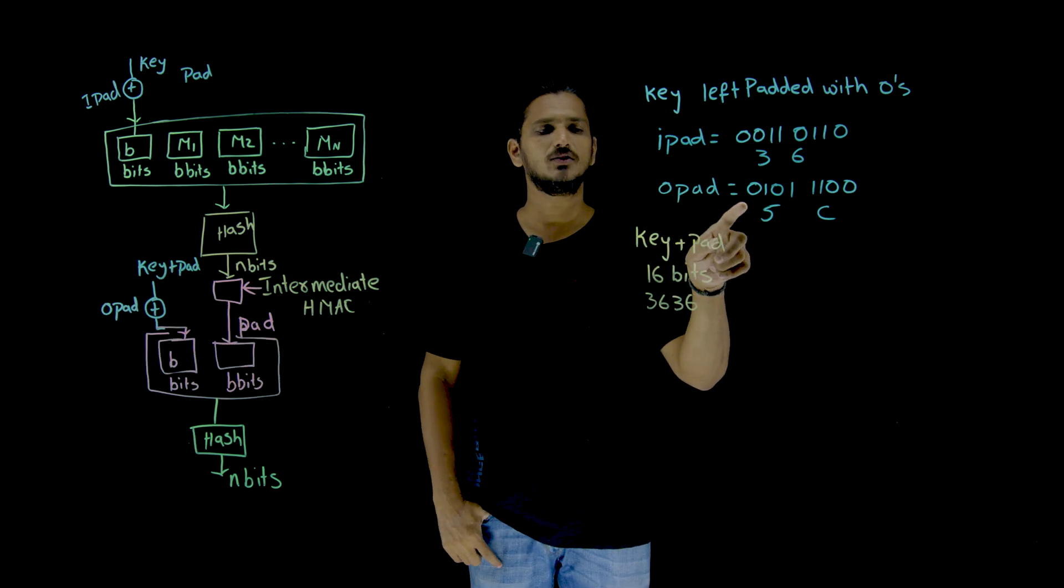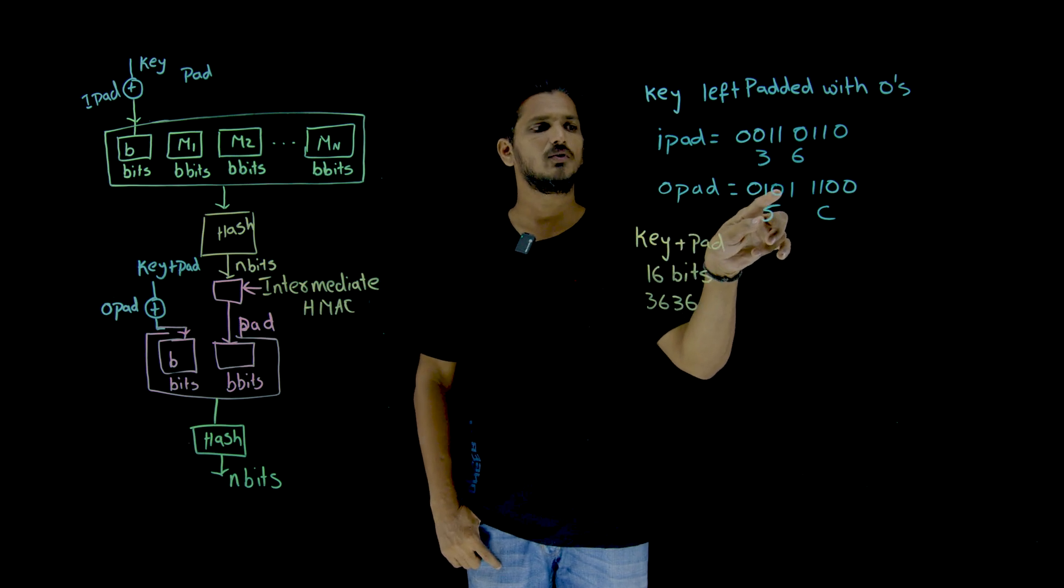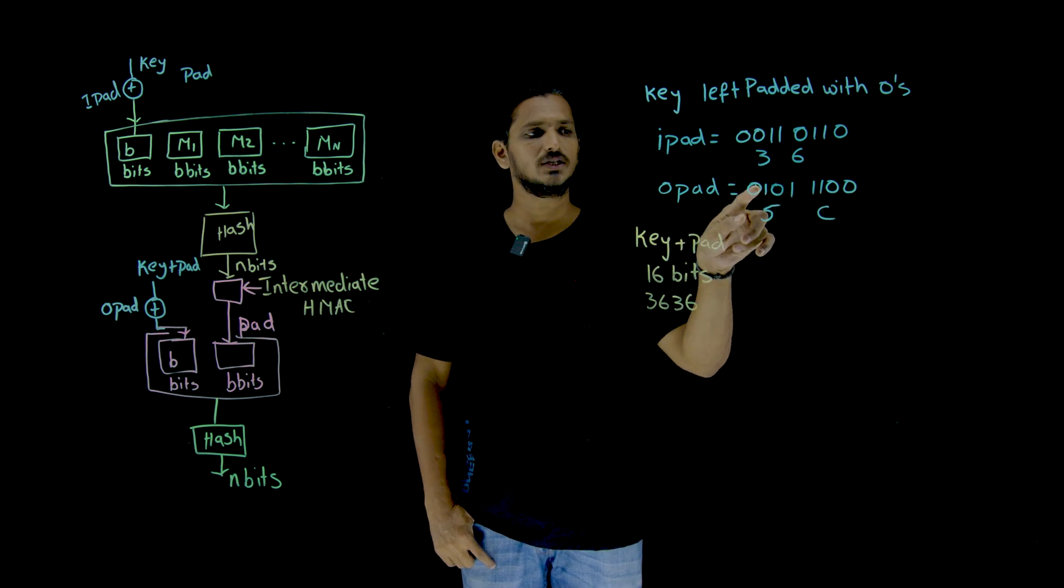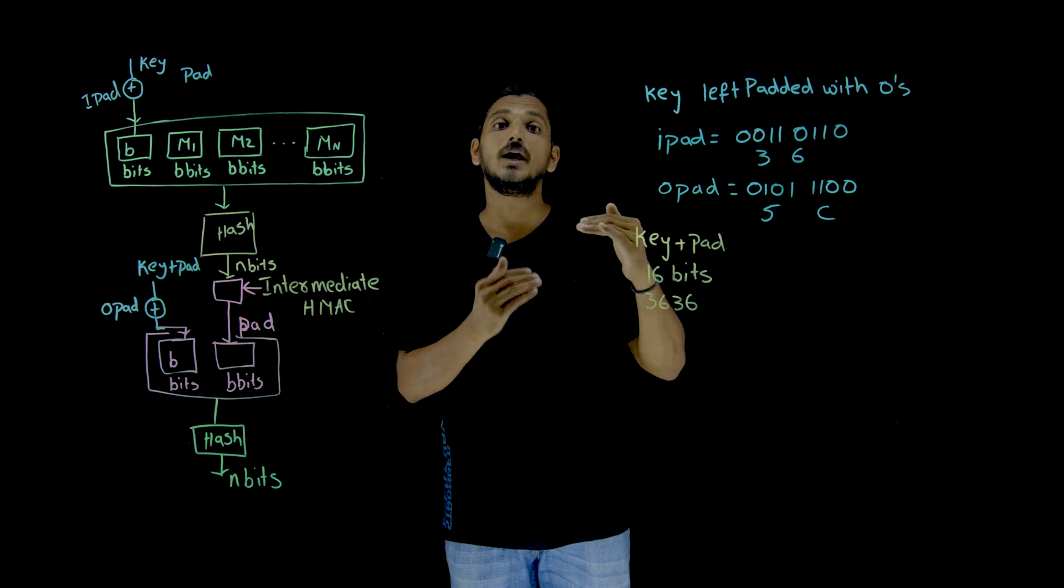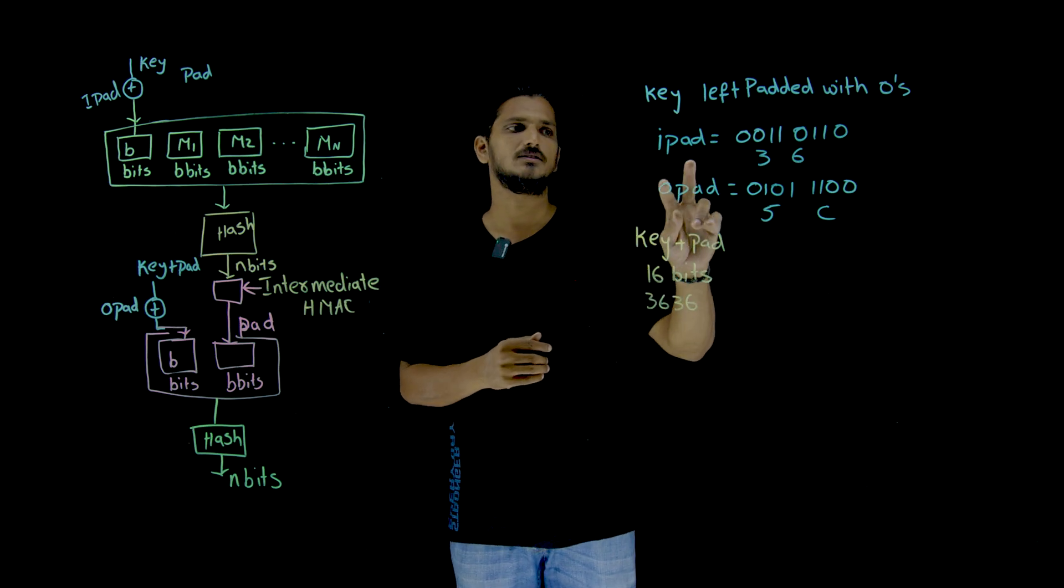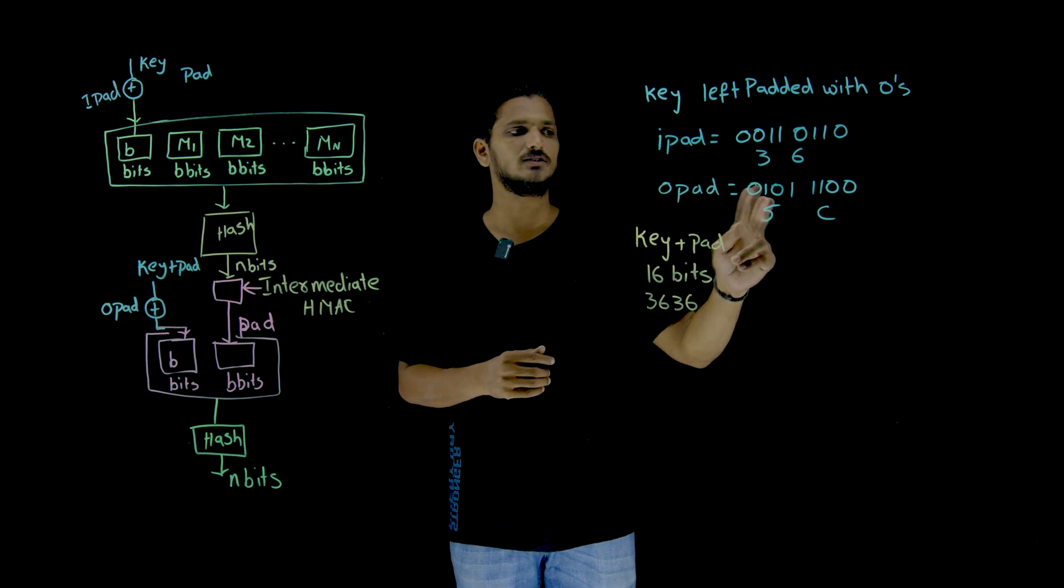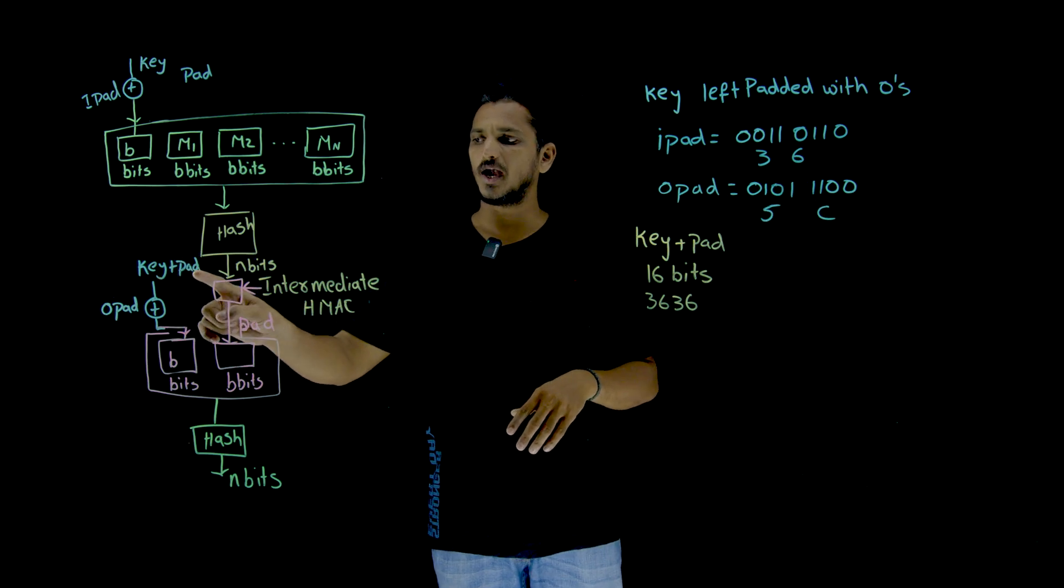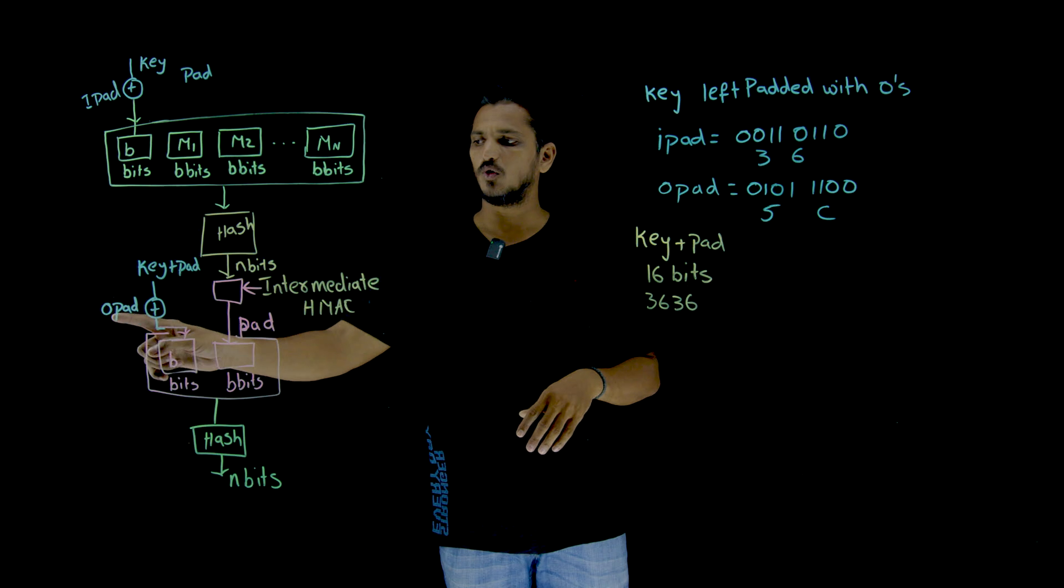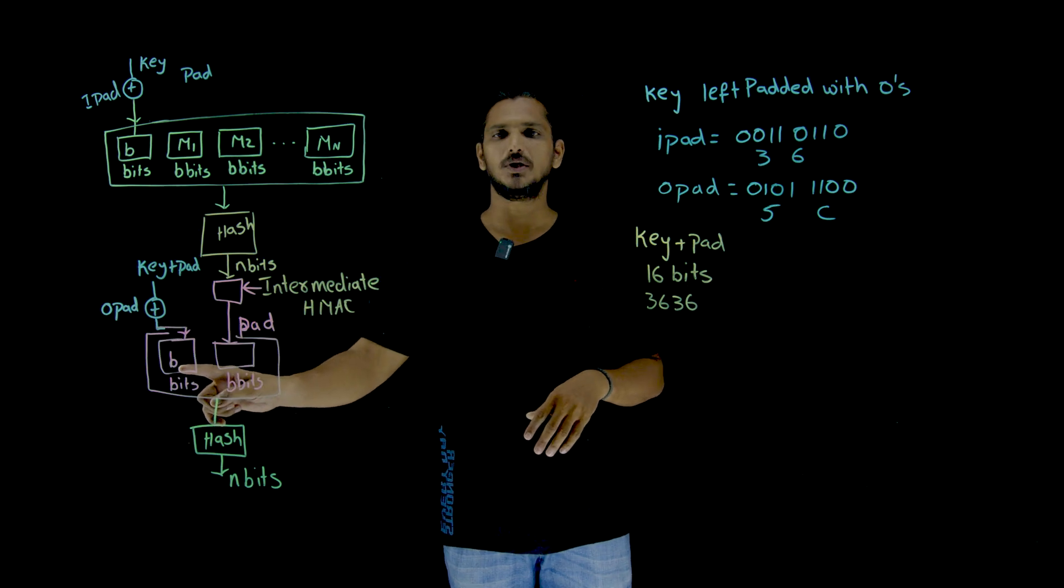O-pad is a value that is predefined 01011100 in hexadecimal 5C. 5C repeated b by 8 times, same like 36 repeated b by 8 times. And this key plus pad is going to be XOR with O-pad and we are going to get b bits.